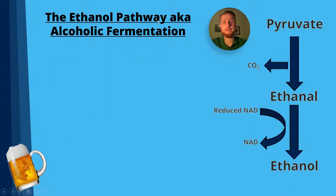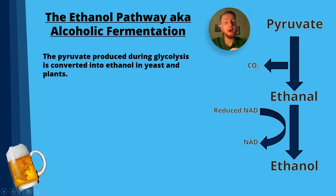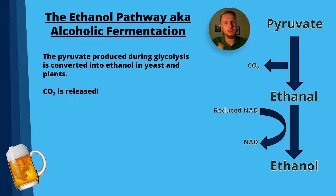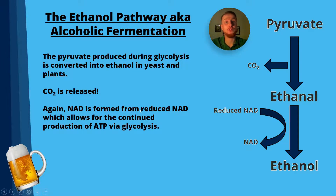Next is the ethanol pathway, also known as alcoholic fermentation. The pyruvate produced during glycolysis is converted into ethanol in yeast and plants. CO2 is released here, and that's responsible for the bubble-like structure in a slice of bread — the yeast respires anaerobically and CO2 bubbles flow through the dough. There's no ethanol found in bread because baking causes the ethanol to evaporate. Again, NAD is regenerated from reduced NAD, allowing continued ATP production via glycolysis. In the reaction, pyruvate is converted to ethanal releasing CO2, and ethanal is then reduced to ethanol, producing that crucial NAD.